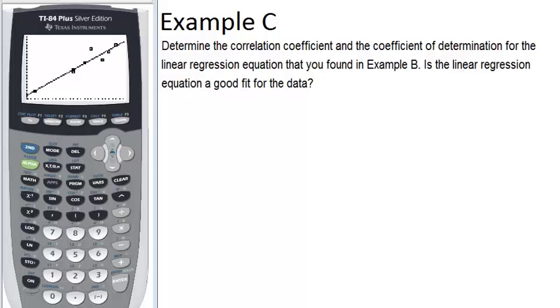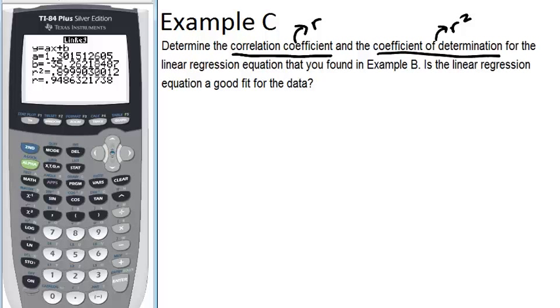Example C: determine the correlation coefficient and the coefficient of determination for the linear regression equation you found in example B. Is the linear regression equation a good fit for the data? So the correlation coefficient is noted by an R, and the coefficient of determination is just R squared. And the closer to 1 that our correlation coefficient is or our coefficient of determination, then the better the fit of the line. So we can go back to our home screen where we had our linear regression where we figured out the equation, and we can see the values here for R squared and for R. Now R is a positive value because there's a positive correlation for this data. The line had a positive slope. If the line had a negative slope, then the correlation coefficient would be negative.